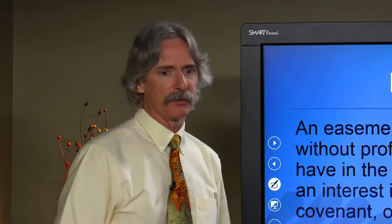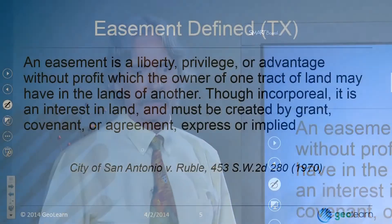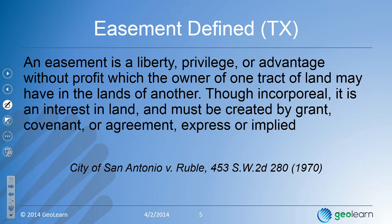Here's another definition — this one's out of Texas: an easement is a liberty, privilege, or advantage without profit, which the owner of one tract of land may have in the lands of another. Though incorporeal, it is an interest in land and must be created by grant, covenant, agreement, express, or implied.